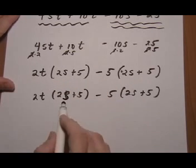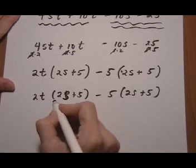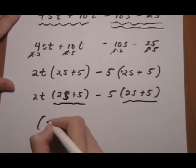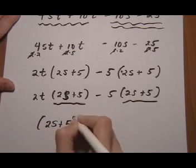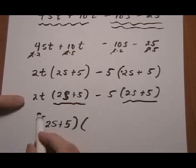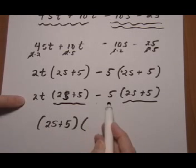That s looks like a 5 now. So, common binomial. Pull it out, (2s + 5). Leftovers, 2t take away 5.